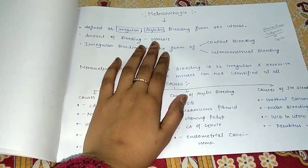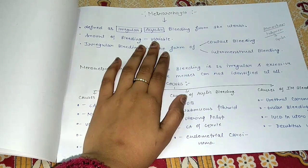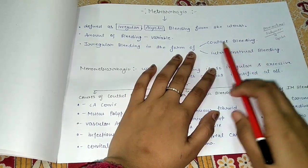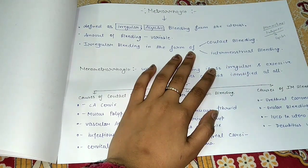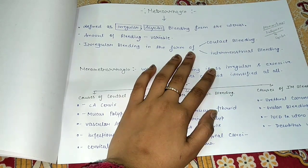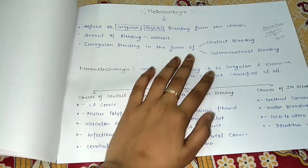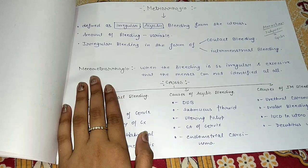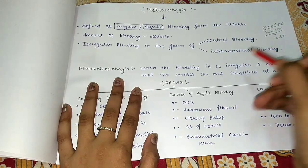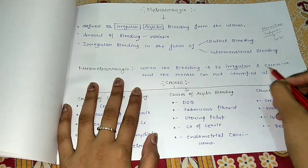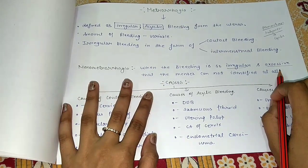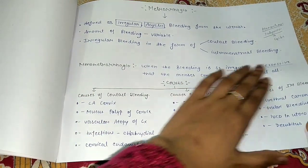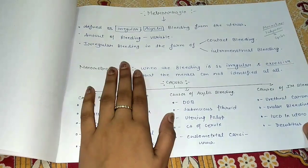In Metrorrhagia, the amount of bleeding is variable — it can be less or more. The irregular bleeding can occur as contact bleeding, meaning bleeding that occurs upon contact, or as intermenstrual bleeding, meaning bleeding that occurs between periods within a cycle. When the bleeding is so irregular and excessive that the menstrual periods cannot be identified at all, we call it Menorrhagia.